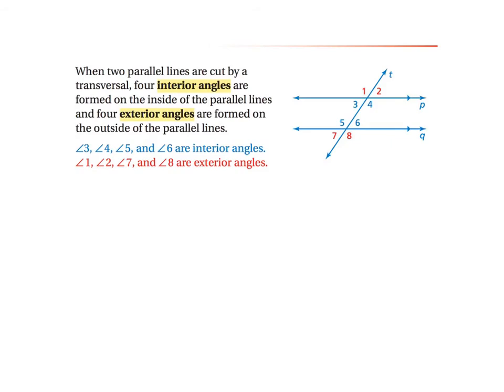Now our puzzles get even more challenging. There are two more words we need to know: interior angles and exterior angles. Looking at the image, angles three, four, five, and six are interior angles because they're on the inside. Angles one, two, seven, and eight are exterior angles. They are either on the inside of the parallel lines or the outside of the parallel lines. Pause the movie and write these definitions and this image into your notes.